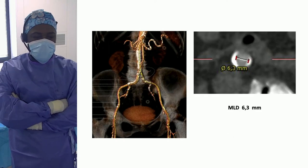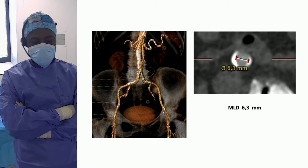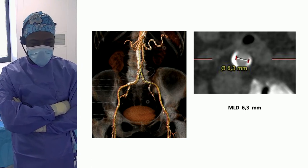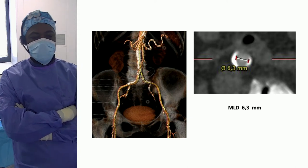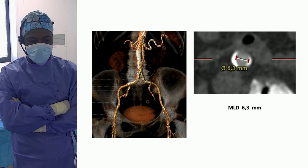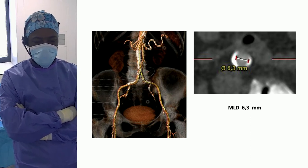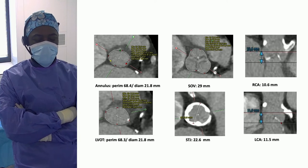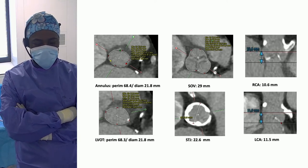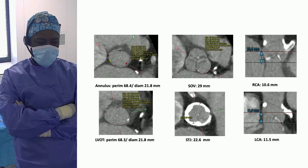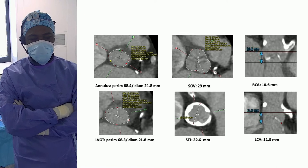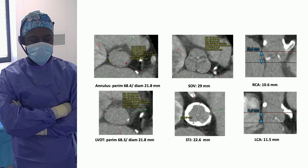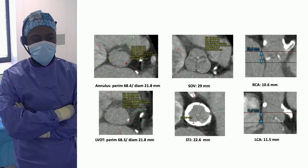On CT assessment, from the peripheral vasculature standpoint there is calcium, but no circumferential calcium spots. The mean diameter is slightly above 6 millimeters on both sides, so we are going through the right axis because there is no major tortuosity and the vessel diameters are fine. For the aortic root assessment, this is a small anatomy — the perimeter-derived annulus diameter is slightly below 22 millimeters, exactly 21.8 millimeters, in a tubular configuration similar to the LVOT. So definitely a small anatomy.